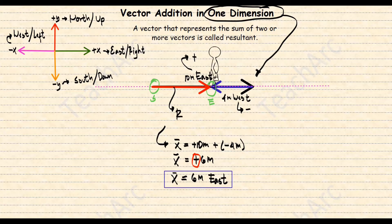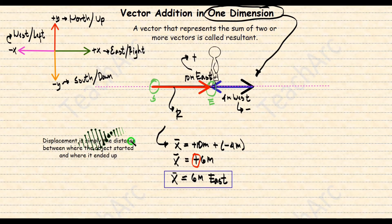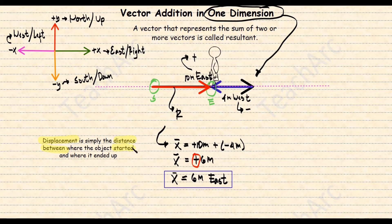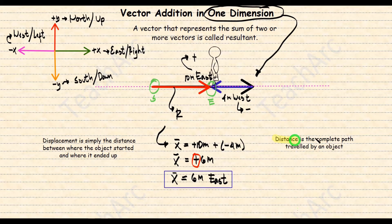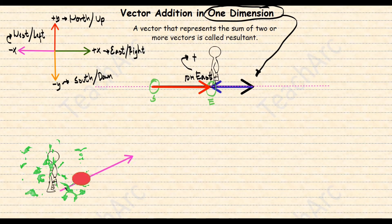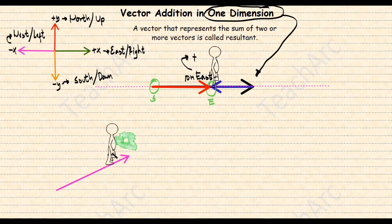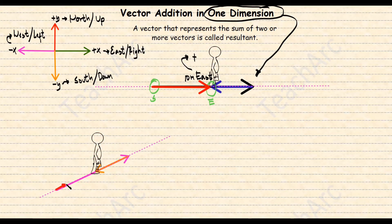This can also help us compare between displacement, which is a vector quantity, and distance, which is a scalar quantity. Displacement is simply the distance between where the object started and where it ended, while distance is the complete path traveled by the object. In our example, the total distance will be 14 meters. In the case of diagonals, they are still considered one dimension as long as they lie on a straight line. You just need to assign which direction is negative and which will be positive, so you can analytically solve for the resultant.